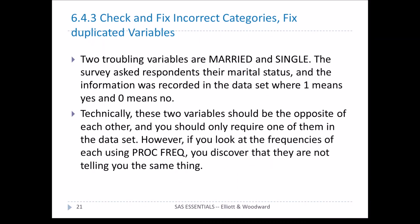There are a couple of troubling variables in this data set. The survey has two questions — 'are you married?' and 'are you single?' — which normally would be one or the other. As we'll see, the answers don't match. These two variables should technically be the opposite of one another, but they're not, as a frequency analysis will reveal when we look at the counts.